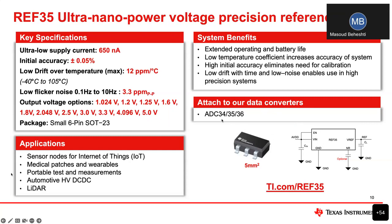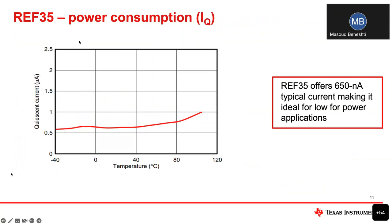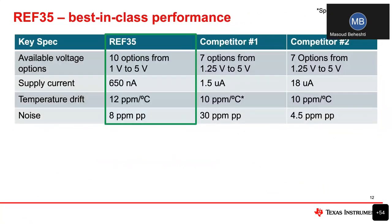This device pairs very well with some of TI's data converters, such as the ADC 34, 35, and 36, among others. The power consumption is very low and stays stable over the temperature range of the device, making it ideal for low power applications where minimizing current draw is critical. Comparing REF35 with close competitors, it shines across all specs — supply current, temperature drift, and noise — making it ideal not only for low power but also high precision applications.